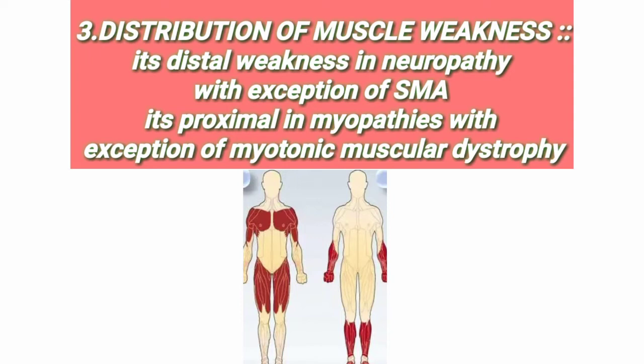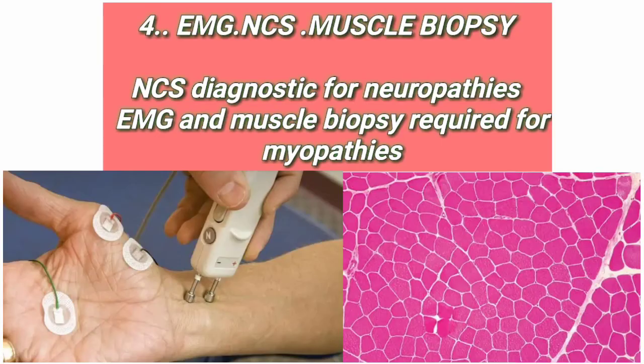Proximal muscles, like those of the hip girdle and shoulder girdle, are involved in myopathies, while distal muscles of the forearm and legs are involved in neuropathies. There are exceptions: SMA is a neuropathy with involvement of proximal muscles, and myotonic muscular dystrophy is a myopathy with involvement of distal muscles. Otherwise, all other neuropathies and myopathies usually follow the same rule.